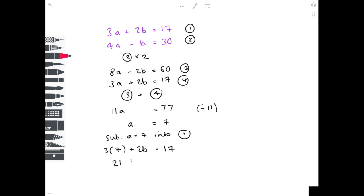3 times 7 is 21, and then we need to get 2b by itself, so we minus 21 from both sides to get 2b equals minus 4. To get b by itself, we divide both sides by 2, and b equals minus 2.